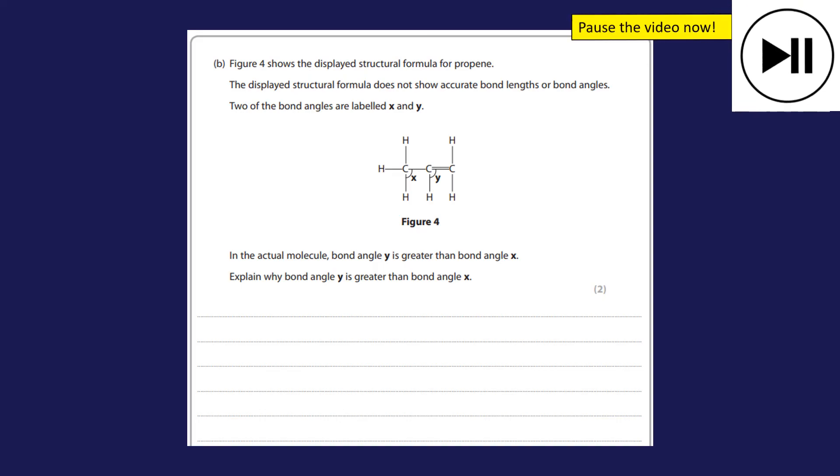Next two marks for part B. Again, pause the video, and when you're ready to hear the answer unpause. We've been given some structural formula for propene. It's talking about bond angles, and Y is a greater bond angle than X. Right, well we know that carbon one is going to be tetrahedral with a bond angle of 109.5 degrees because there's four bonds. So that's X. For Y it's going to be trigonal planar, and that was 120 degrees, and that's because there's only three bonds instead of four. So there's only three bonds to repel each other, so they can get further away. When there's four bonds to repel each other they can't quite get as far away.